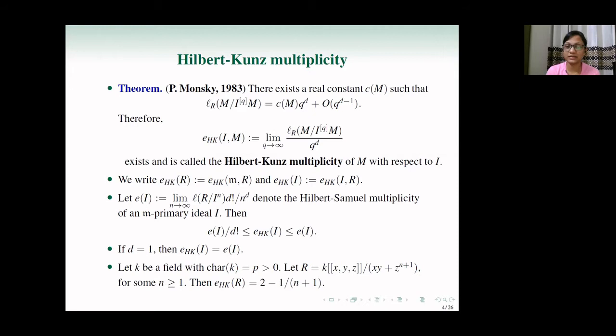Here is a quick example. Let k be a field of positive characteristic, and let R = k[[x, y, z]] / (xy + z^(n+1)), where n ≥ 1. In this case, the Hilbert-Kunz multiplicity is 2 - 1/(n+1). Two observations: first, it is not equal to the Hilbert-Samuel multiplicity, which is 2. Second, the Hilbert-Kunz multiplicity is a rational number, whereas the Hilbert-Samuel multiplicity is always an integer. We'll come back to this property of these two numbers later.